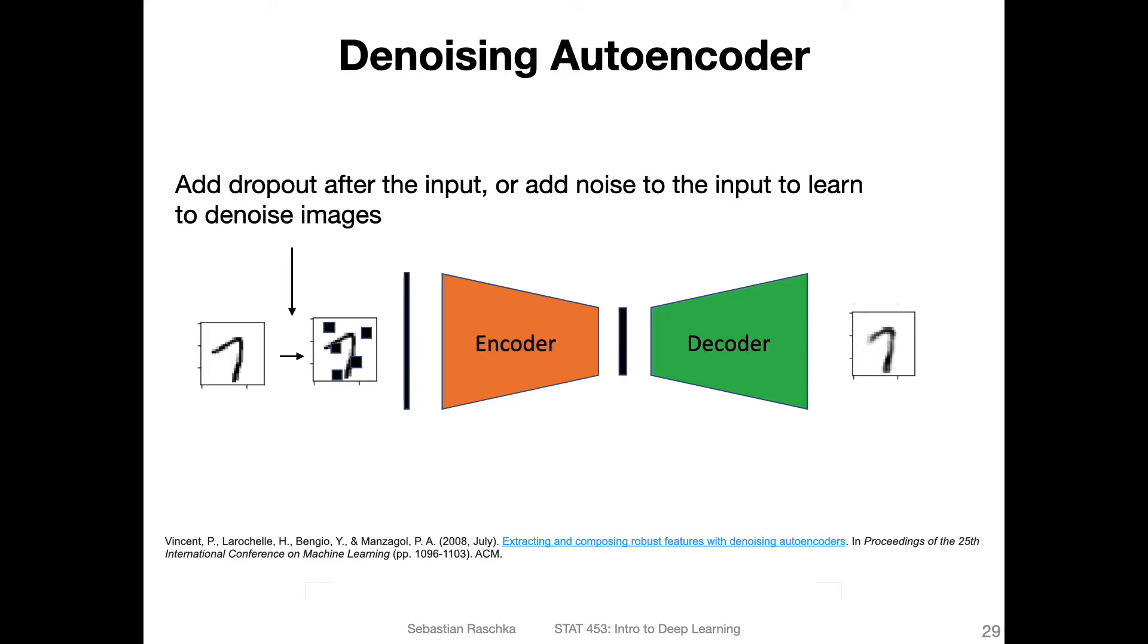You can use the idea of dropout to construct a so-called denoising autoencoder. In the very first video of this lecture, I showed you an example where an autoencoder was denoising medical images. If you add dropout directly after the input, it will essentially add noise to your image because half of the pixels will be removed. So you have this noisy representation of the input, but you still compute your reconstruction loss between the original input and the reconstruction.